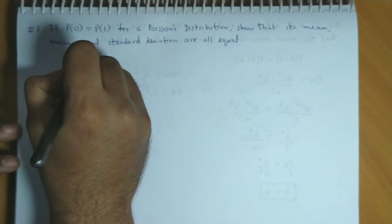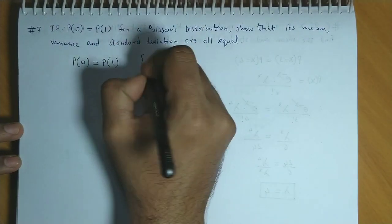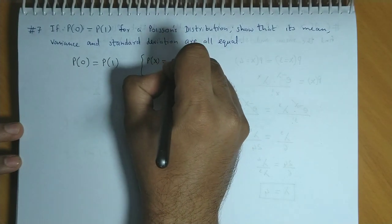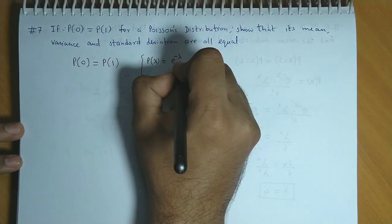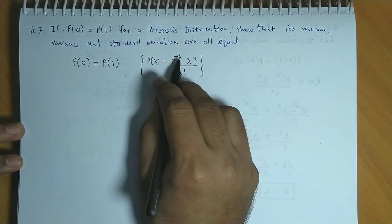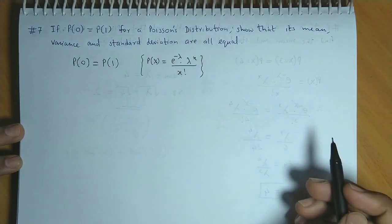We have a condition that P of 0 is equal to P of 1. Now, we know that for a Poisson's distribution, probability at x is given by e raised to minus lambda into lambda raised to x upon x factorial, where lambda is the parameter of the Poisson's distribution.